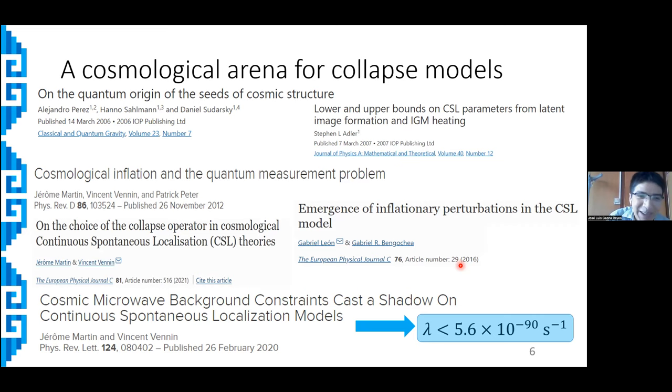Therefore, applying it to this context may raise some doubts. In particular, because there is not a generalization, it is not clear which is the appropriate collapse operator. Several proposals have been made. One collapse operator has been chosen to be the quantized Mukhanov-Sasaki variable itself. Other authors, in particular Jean Martin and Vincent Vennin, proposed a linearized energy density contrast as a collapse operator. With this choice, they found out that for the relevant parameters of the model, this formulation is discarded.